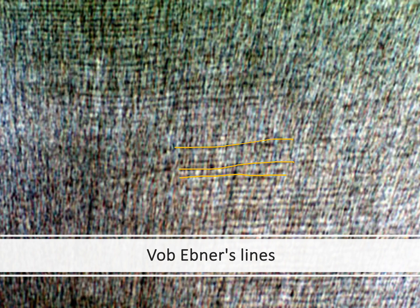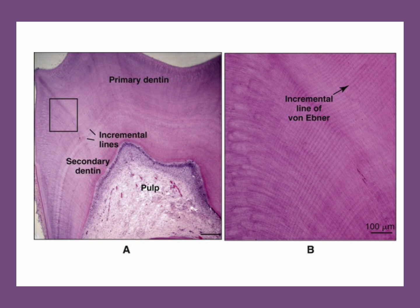You may remember something similar from the enamel histology session. The von Ebner lines really look like the cross striations of enamel, and they can only be seen under very high magnification. The dentinal tubules run in one direction and these are the incremental lines of von Ebner, which represent daily increments or the daily position of dentine deposition.